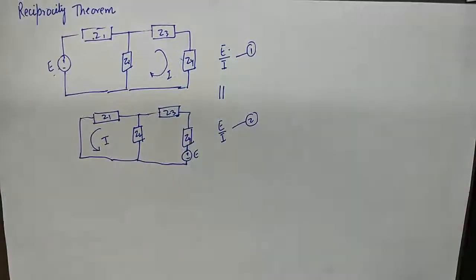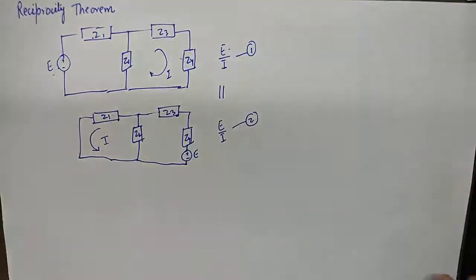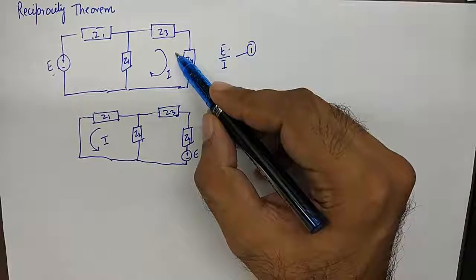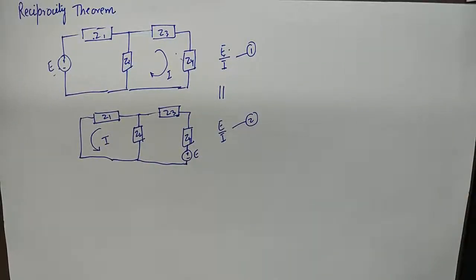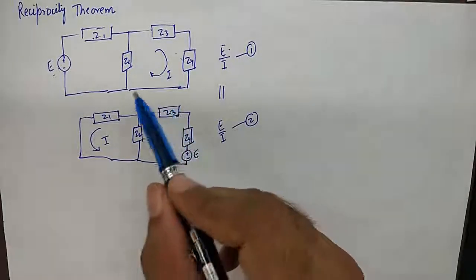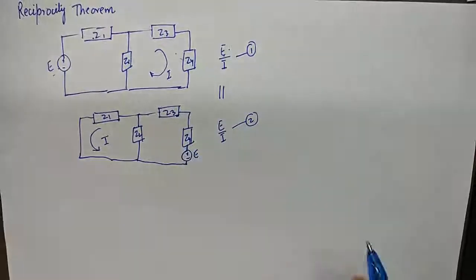Now if you were to calculate the ratio of E upon I by simple network theorem, you will find that this ratio of this network and this ratio of this network would come out to be equal. So I will not go into the details of calculating E upon I on these two networks. I will take up a specific example where I will solve a question by Reciprocity theorem with real impedances in place. And this was just an introduction to Reciprocity theorem. I hope you liked the quick introduction and its explanation.